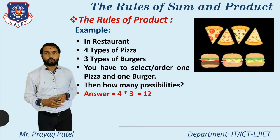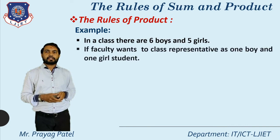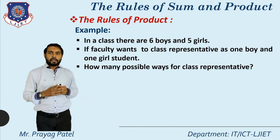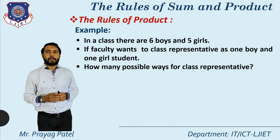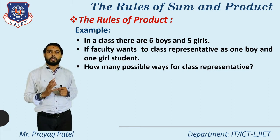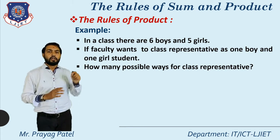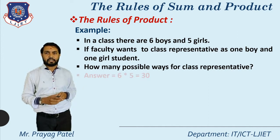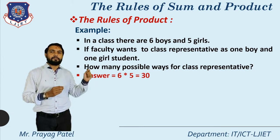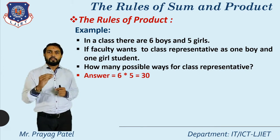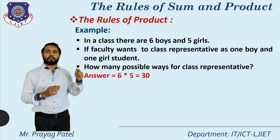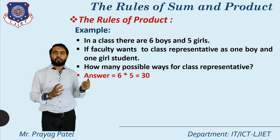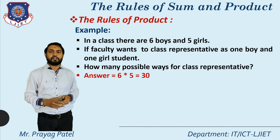The classroom example for the rule of product: in a class there are six boys and five girls. If the faculty wants one boy and one girl as class representatives — not any one student but one from boys and one from girls — how many possibilities are there? The answer is six multiplied by five equal to 30. For the first boy we can select any of the five girls, and similarly for each of the six boys, giving 30 total ways.